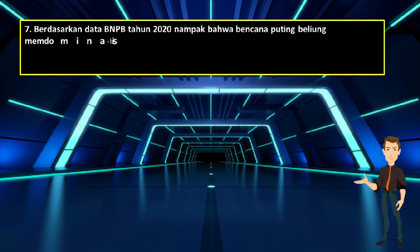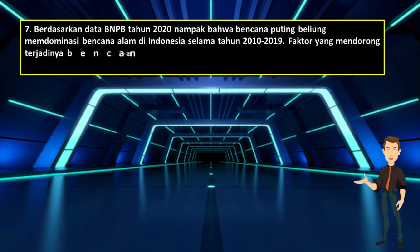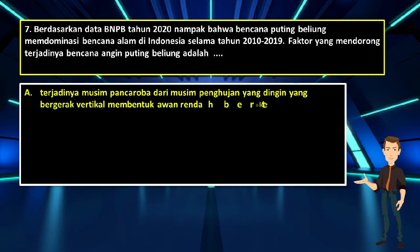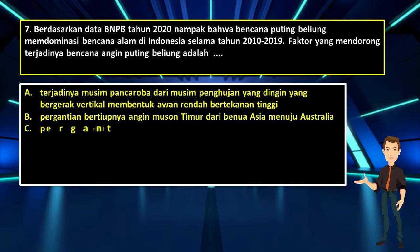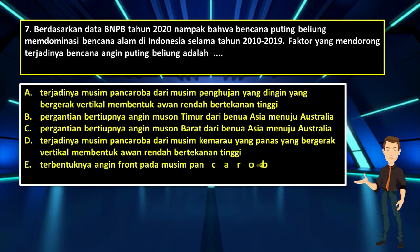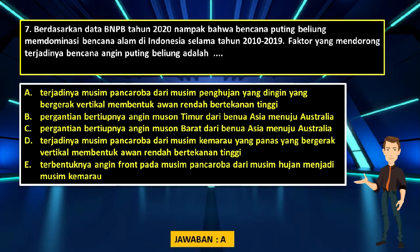Nomor 7. Berdasarkan data BNPB, tahun 2020 nampak bahwa bencana puting beliung mendominasi bencana alam di Indonesia selama tahun 2010-2019. Faktor yang mendorong terjadinya bencana angin puting beliung adalah: A. Terjadinya musim pancaroba dari musim penghujan yang dingin, bergerak vertikal membentuk awan rendah bertekanan tinggi; B. Pergantian bertiupnya angin muson ke timur dari benua Asia menuju Australia; C. Pergantian bertiupnya angin dari musim kemarau yang panas, bergerak vertikal membentuk awan rendah bertekanan tinggi; E. Terbentuknya angin front pada musim pancaroba dari musim penghujan yang dingin, bergerak vertikal membentuk awan rendah bertekanan tinggi.